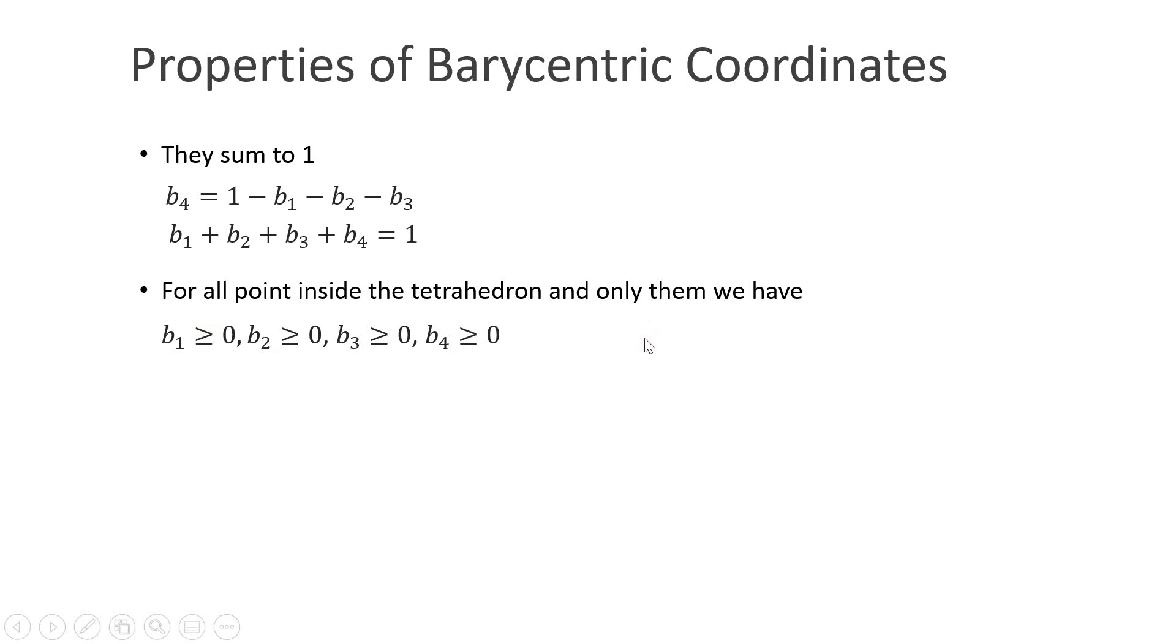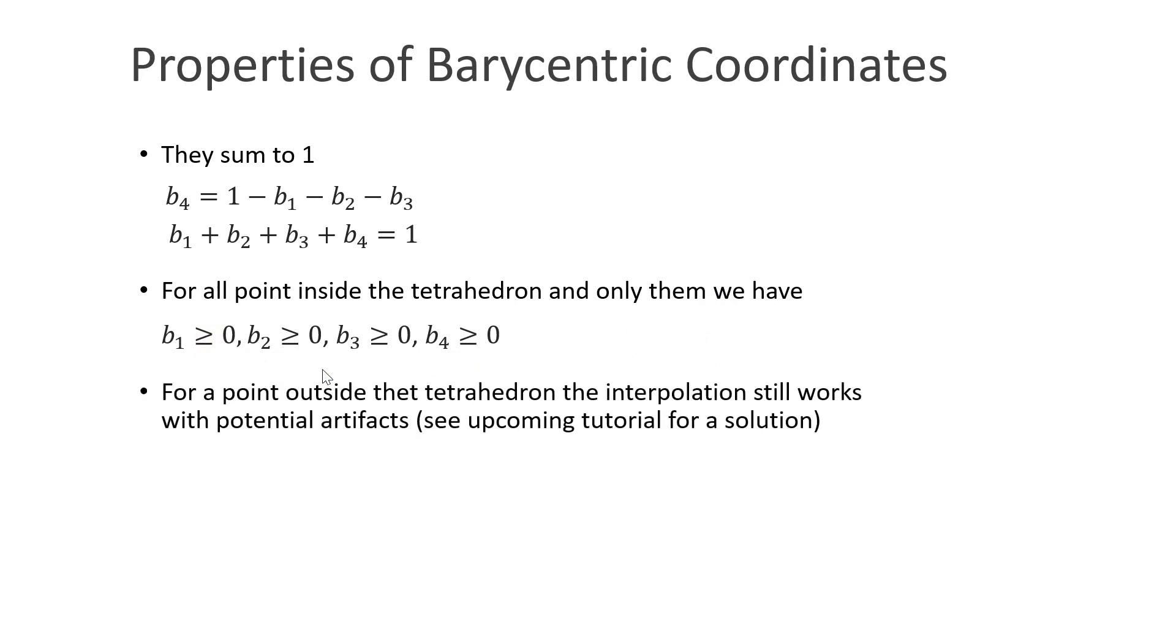Barycentric coordinates have some interesting properties. For instance, they sum to 1. We can easily see this from this equation here by moving b4 to the other side. Also, for all the points in the tetrahedron and only for them, all the four barycentric coordinates are greater or equal to 0. For points outside the tetrahedron, the interpolation still works, but it might introduce potential artifacts. I will show how to solve this problem in an upcoming tutorial.